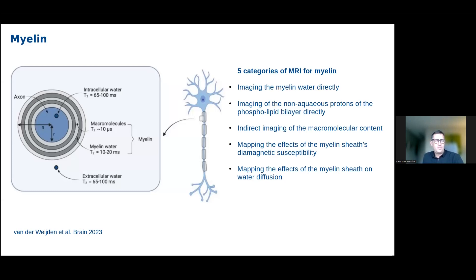Another important property of the myelin sheath is that it is diamagnetic. Therefore, it is a good modifier of the resonance frequency of the signal, which can then be translated into magnetic susceptibility maps. The nice thing about that technique is that it uses all protons in the area to probe the resonance frequencies, so it does not lose signal-to-noise ratio as you lose myelin. It's actually very sensitive to small changes in myelin, for example in MS lesions that are almost completely demyelinated. It also has very high spatial resolution and very high sensitivity. Of course, there are also ways of mapping the effects the myelin sheath has on the diffusion properties of the water — there's a vast literature on that.